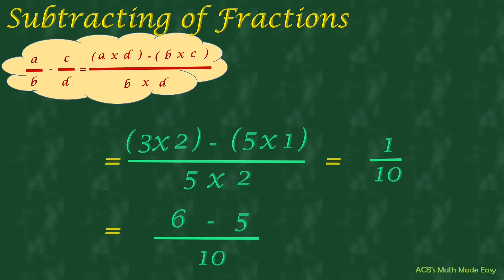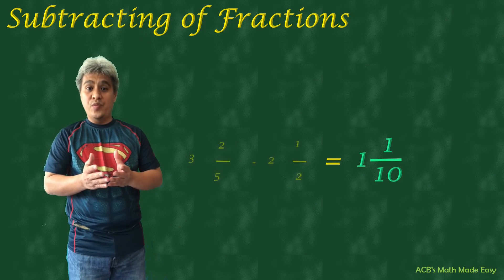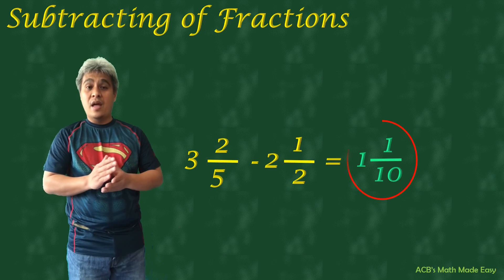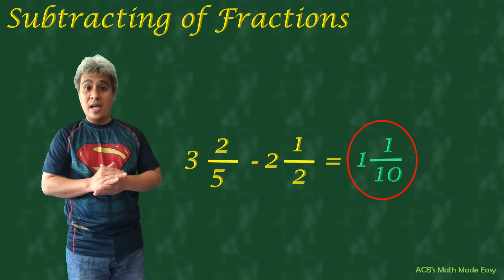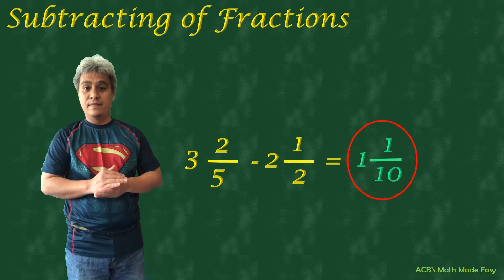Remember the whole number 1 — that is our answer. Just combine it with the fraction. So, 3 and ⅗ minus 2 and ½ equals 1 and 1 over 10.